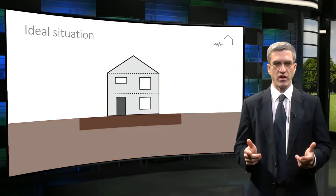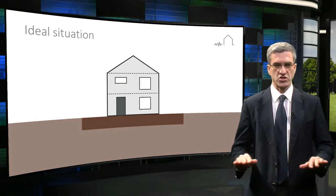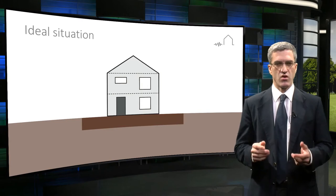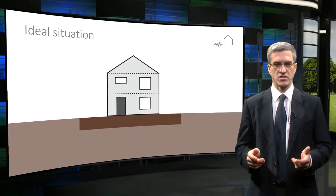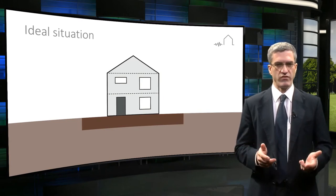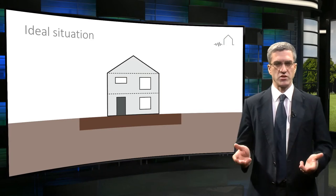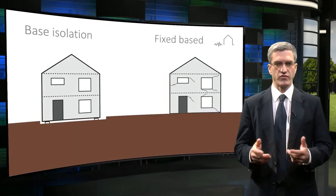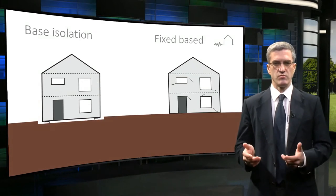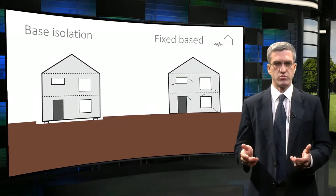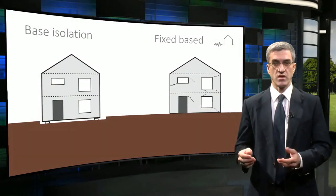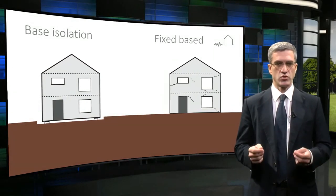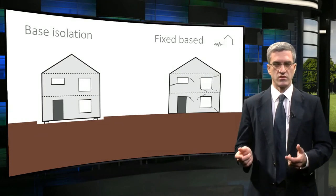Imagine if a building were placed on a perfect, frictionless horizontal sliding surface. In such a case, horizontal forces could not be transmitted to the building and therefore there would not be any building damage. Practical base isolation systems have to incorporate some minimum horizontal resistance to prevent wind-induced movements and preferably some re-centering capability to control permanent horizontal displacements.